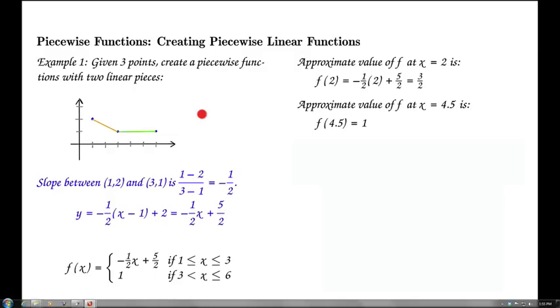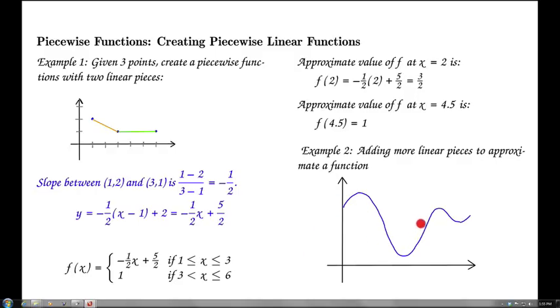We can also do something very similar by adding more pieces to a linear approximation where instead of points, individual discrete points that we're connecting, we can actually have a curve that we know something about, and we're trying to approximate this complicated curve with straight line pieces so that it's easier to evaluate, for example.